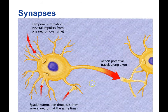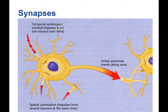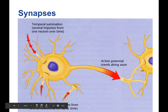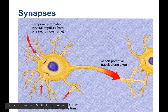Temporal summation is when repeated stimuli within a brief period of time have a cumulative effect on the post-synaptic cell — multiple inputs coming down a single axon within a short period of time. Spatial summation is when several synaptic inputs coming from separate locations exert a cumulative effect on the post-synaptic cell — adding or summing across space as opposed to adding or summing across time.